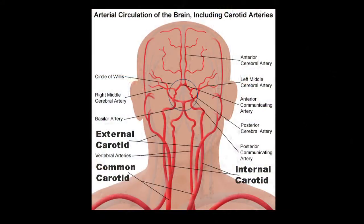Most people believe that it's a lack of flow that causes strokes and embolic events, but in fact it's the plaque that builds up in the carotid arteries, much like in the heart, and pieces of that plaque fly off and end in one of the terminal vessels in the brain that supply function and sensation to an arm or a leg.